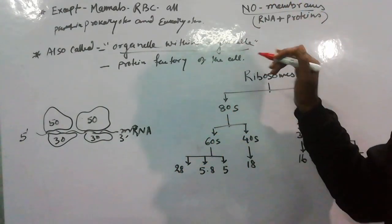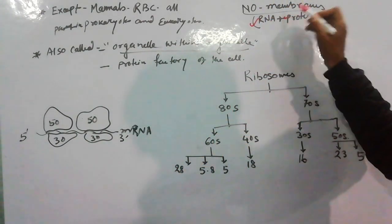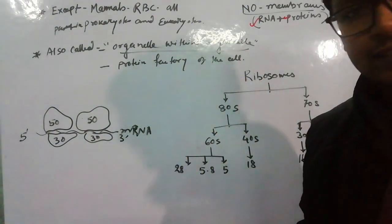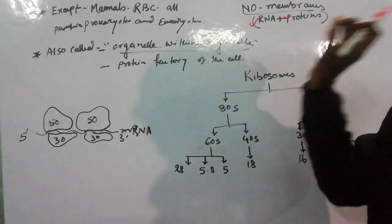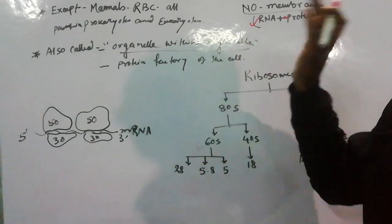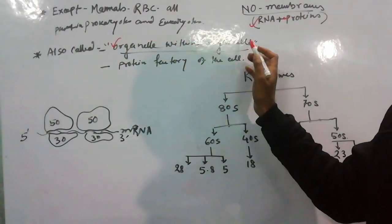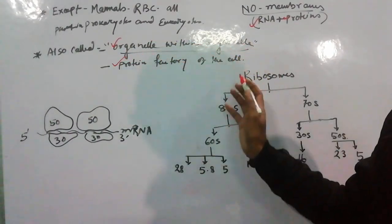So this is non-membranous and made up of RNA and protein. This RNA and protein is the smallest among the cell organelles. The second name is organelle within organelle and protein factory of the cell.